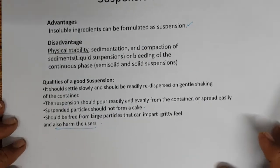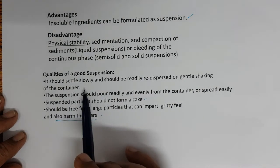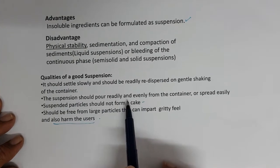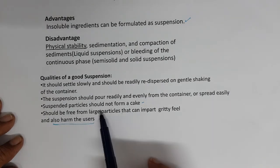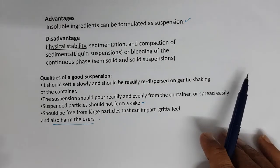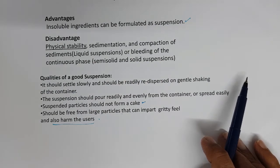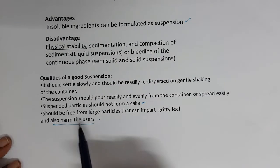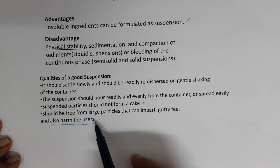The properties of a good suspension: it should settle slowly and should be readily redispersable on gentle shaking of the container. The suspension should pour readily and evenly from the container — this is rheology. Suspended particles should not form a cake. The hard settling at the bottom is referred to as cake. The suspension should be free from large particles that can impart a gritty feel and harm the users.